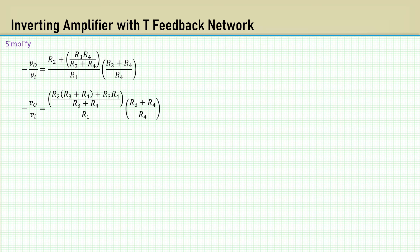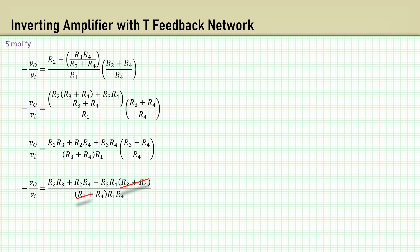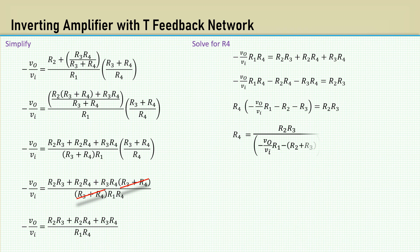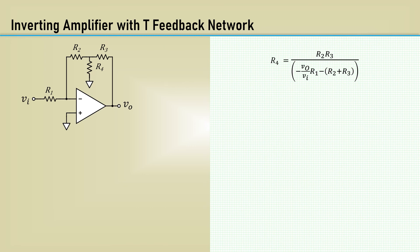Now it's time to simplify this expression. And solve for R4. Let's put this to work and see how we can make a high-gain amplifier with reasonable sized resistors. Let's go for a gain of minus 100, an input resistance of 20 kilo-ohms, and set R2 and R3 to 50 kilo-ohms. That gives us R4 as 1316 ohms.